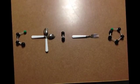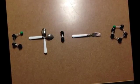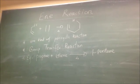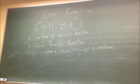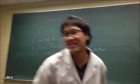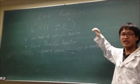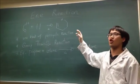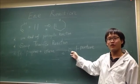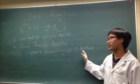Ene reaction. As you can see here, it's one kind of pericyclic reaction. It's called group transfer reaction. A propylene and ethylene react with heat and become a pentene.